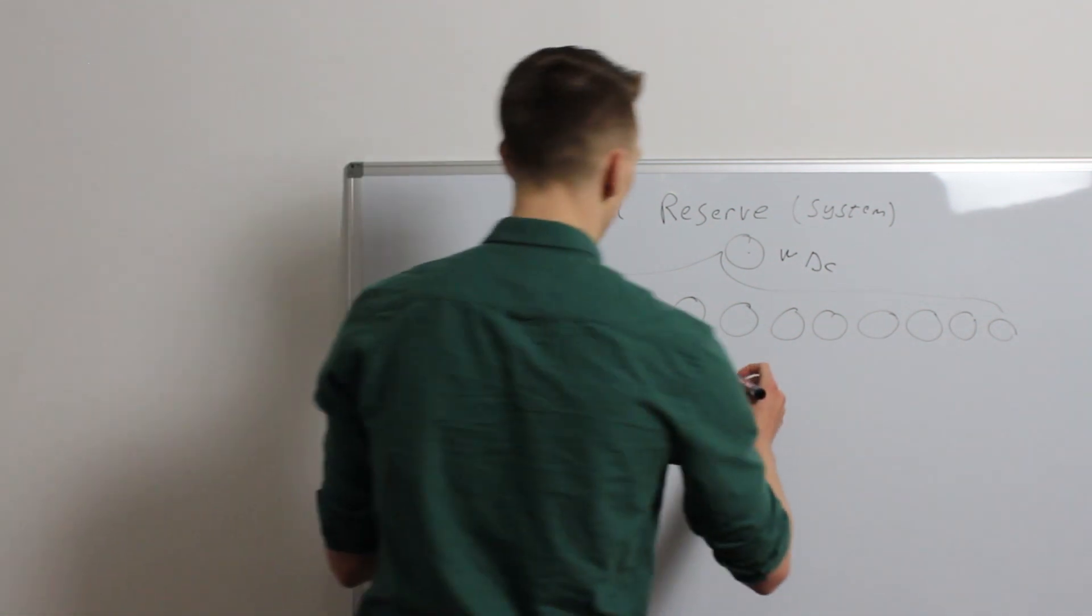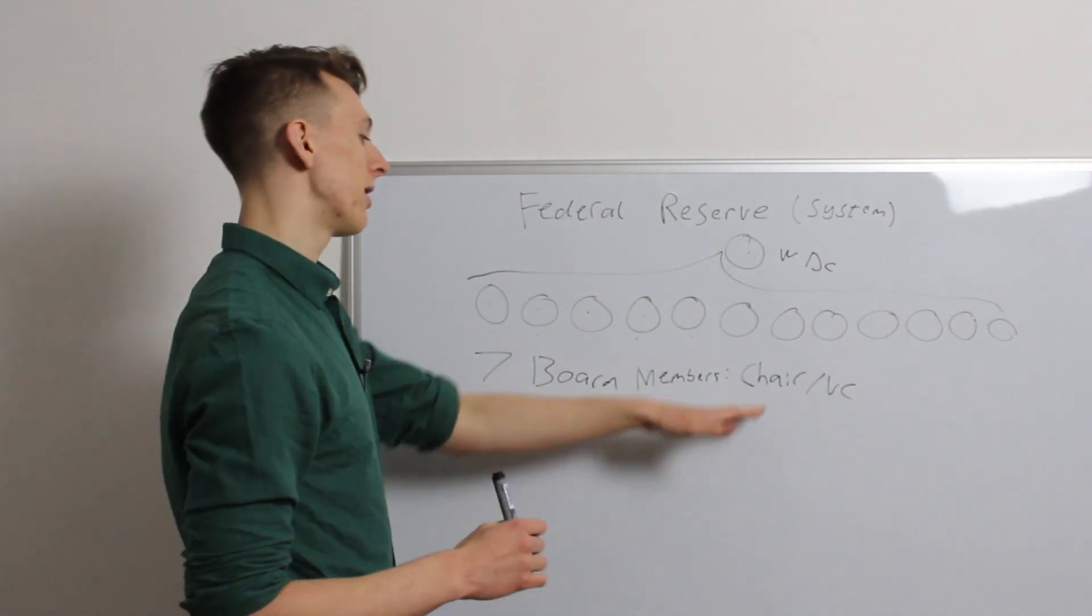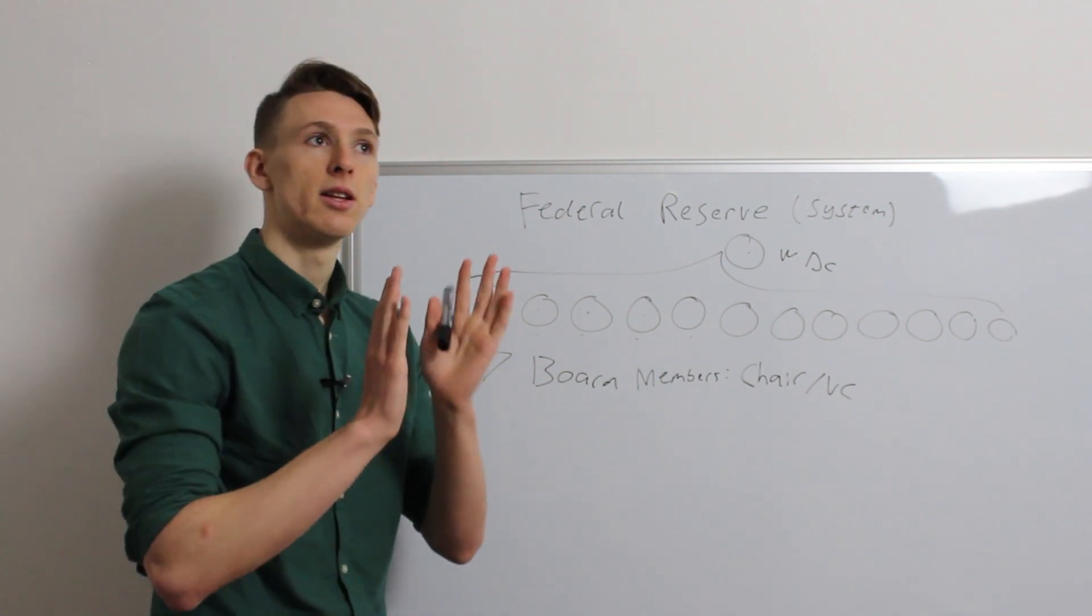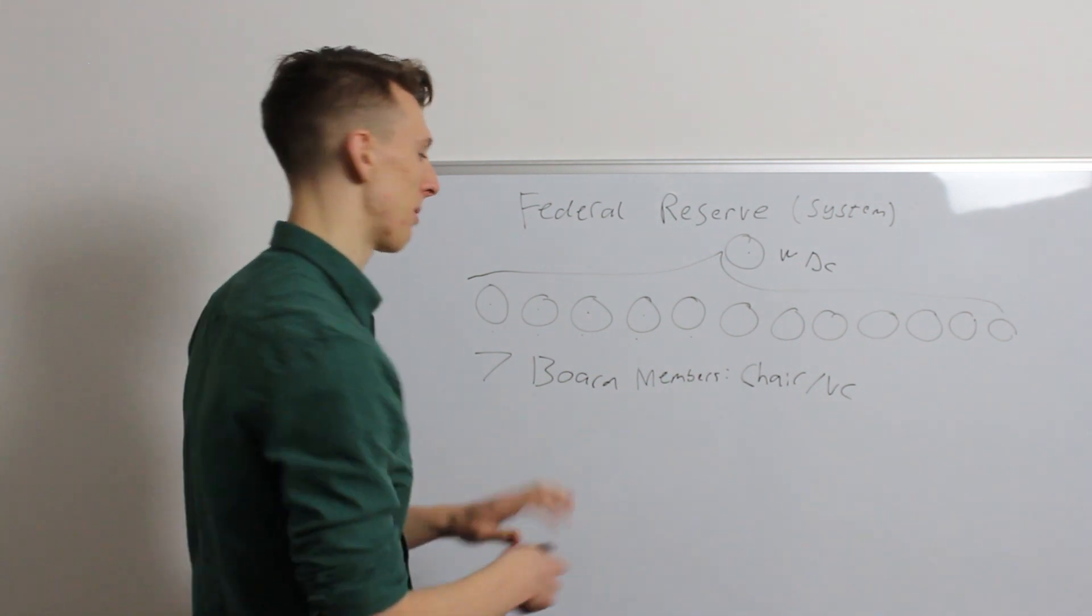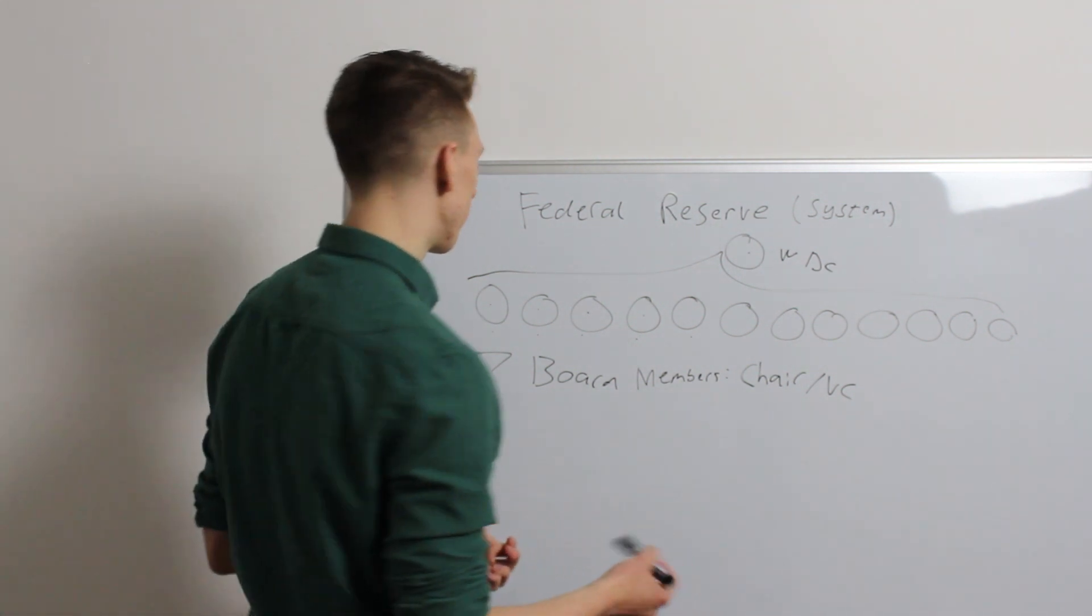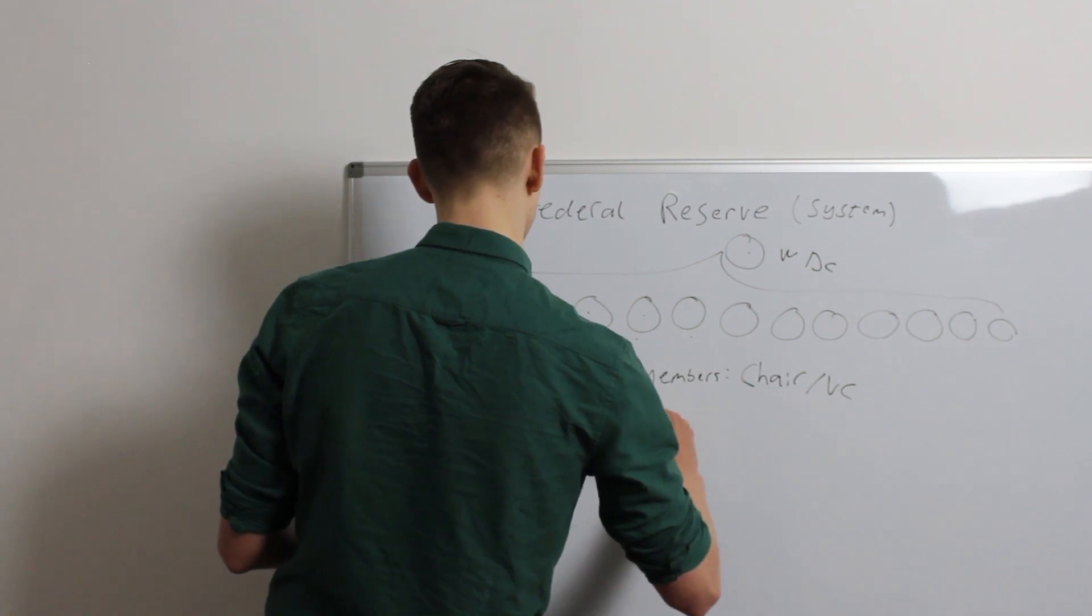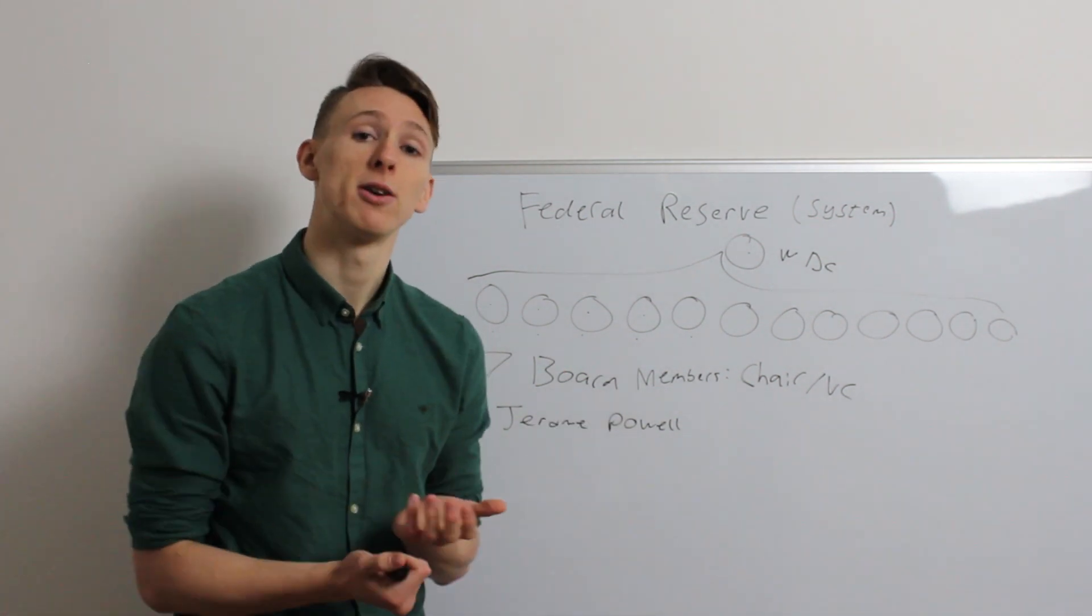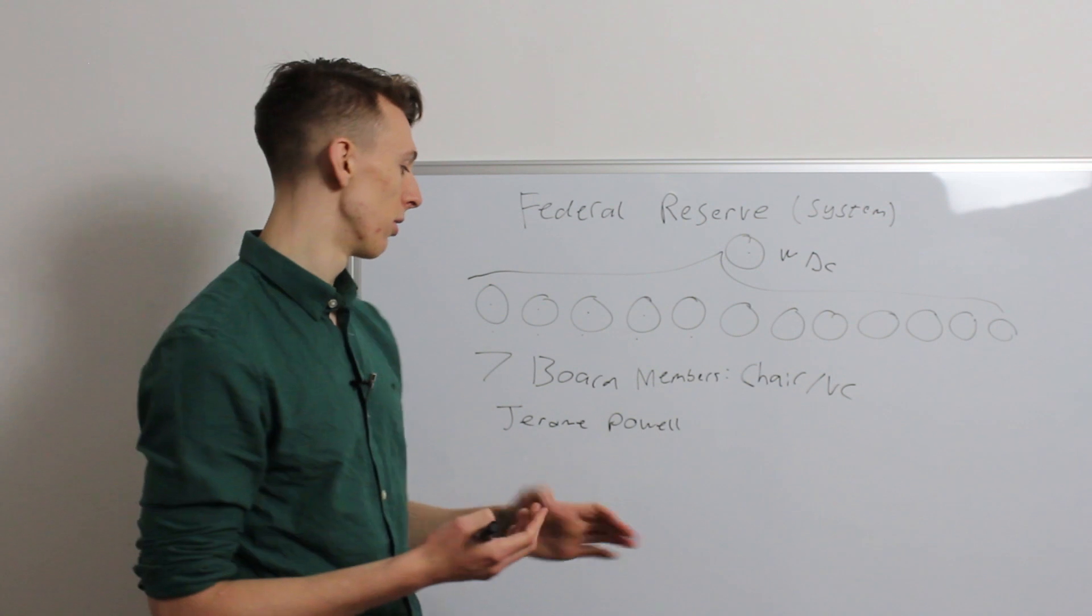There's two important members of this. So, out of the seven, there is a chair, and there is a vice chair. The chair is the guy in charge, or the gal in charge, who sort of sets the way they want to move the policy, and the vice chair is obviously second in command. These two are also nominated by the president and approved by the Senate. At the moment, Big Donald appointed this guy called Jerome Powell, and he's an important guy. So, remember him, because he's the guy currently who you could argue is one of the most powerful people in the world. He is the guy who has a massive effect on the United States economy. So, keep an eye out for him.